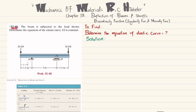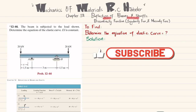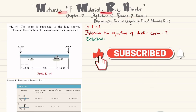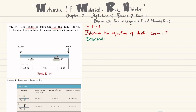Welcome back. Problem 12-44 is taken from Chapter 12, Deflection of Beams and Shafts, from Mechanics of Materials by RC Hibbeler. The beam is subjected to the load shown; determine the equation of the elastic curve. EI is constant. This is an overhanging beam with a roller support at point A and a pin support at point B, with loads of 20 kilonewton at each end.